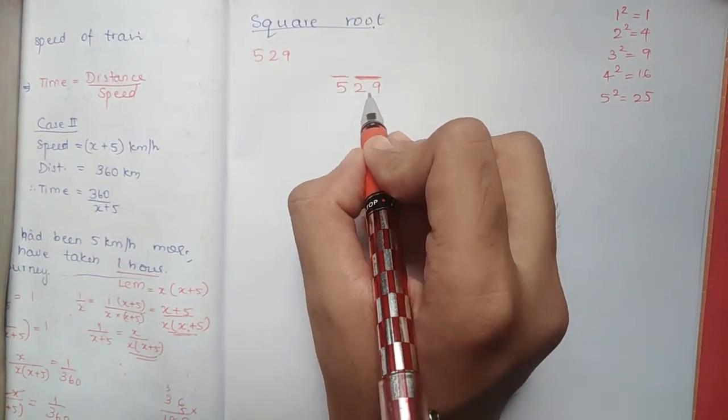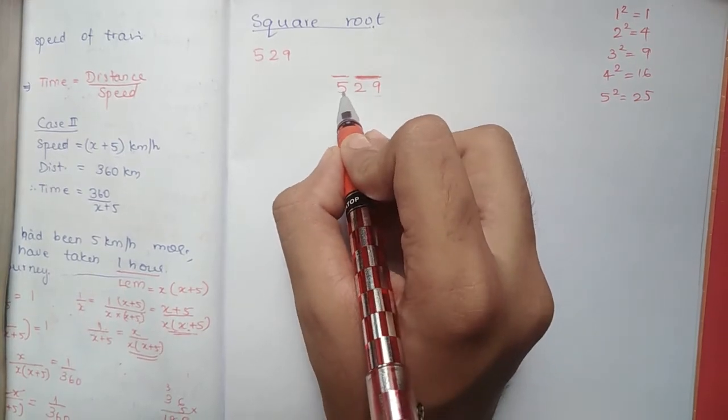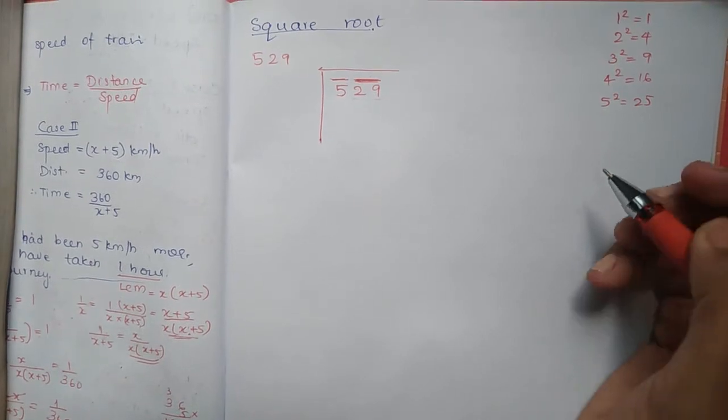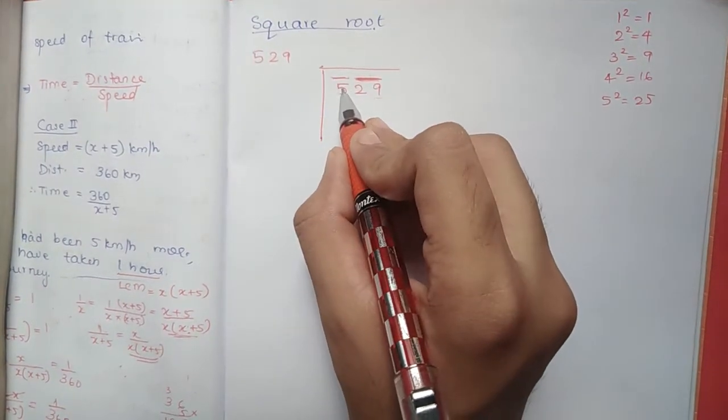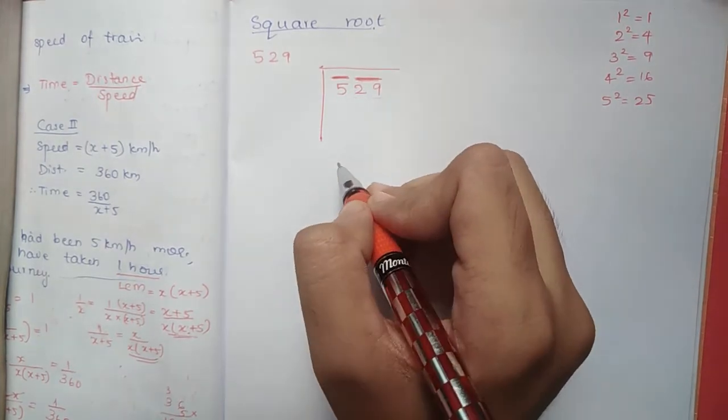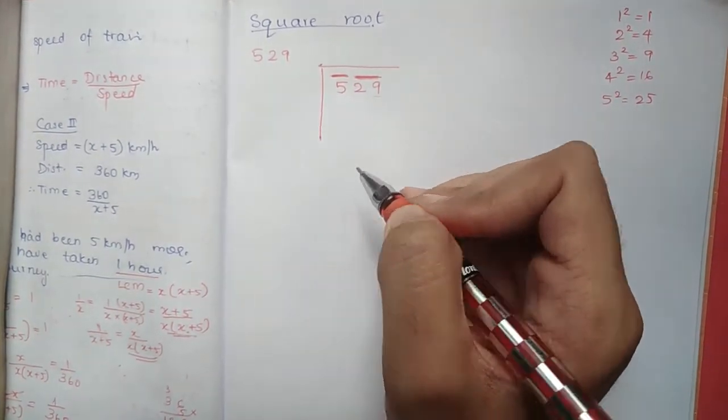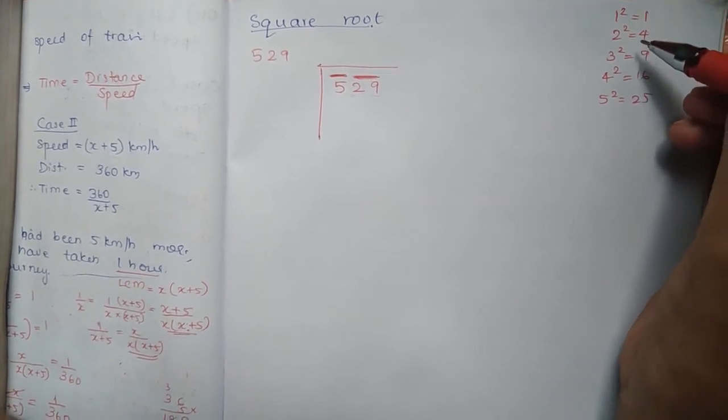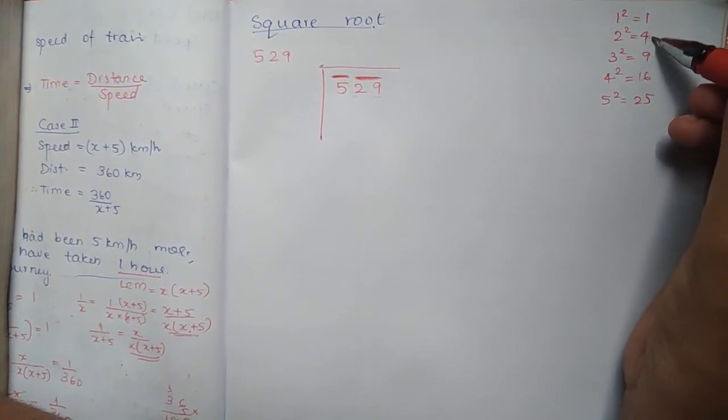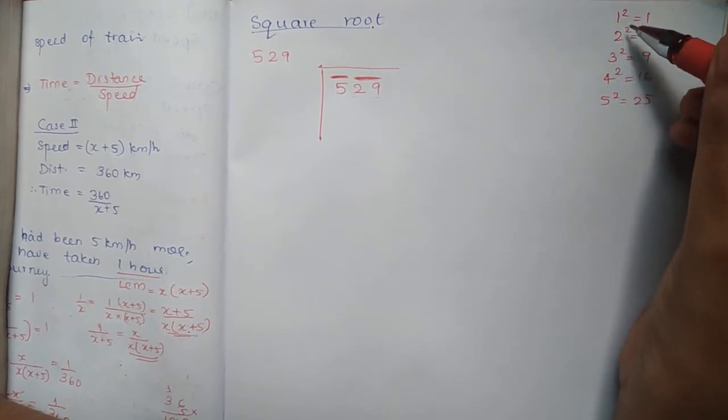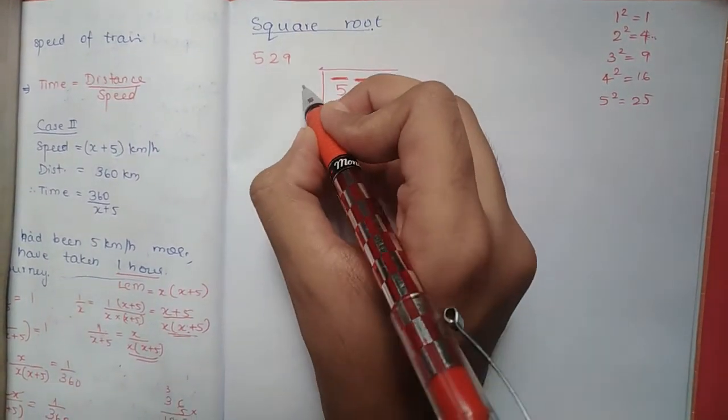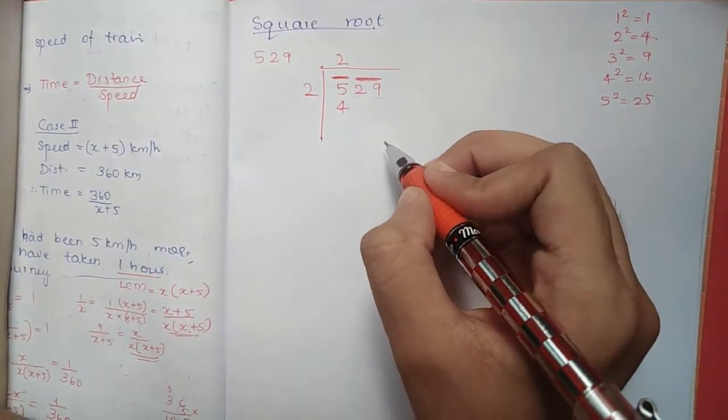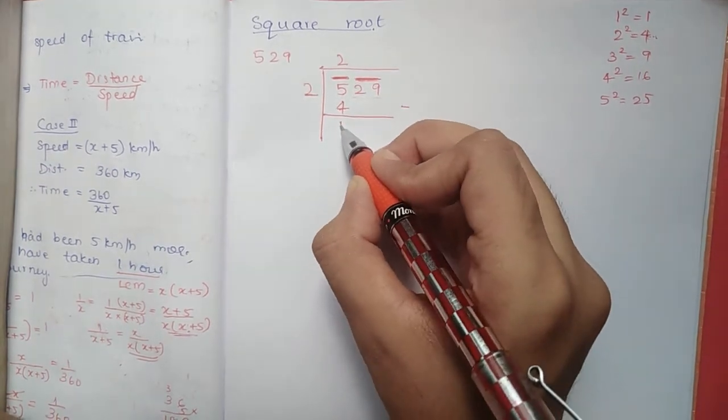Now let's show the square root of 529. This is the first line. The first line is 5. 5's perfect square is 4. 4 is 2 into 2. 2 into 2 is equal to 4. You have to minus. It is 1.